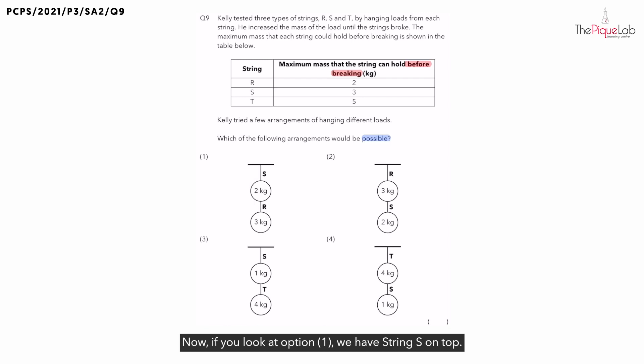If you look at option 1, we have string S on top. Looking at the table, what's the maximum mass that string S can support? String S can support a maximum mass of 3kg before breaking. I know what some of you are thinking - if you look at S, it can support a maximum of 3kg, and the mass below S is 2kg. So you think that means S will not break, so option 1 is possible.